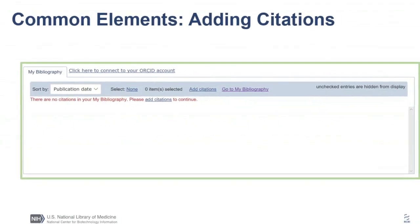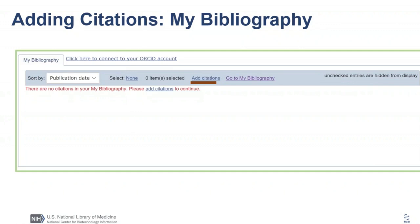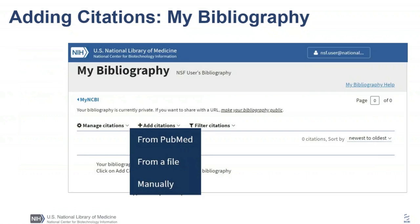Section C for NSF biosketches provides a description of acceptable and unacceptable products and citations. There's also an additional unique element to NSF — the ability to add additional citations. For all biosketches, Section C has an 'Add Citation' box that looks and operates the same. The first tab is My Bibliography; beneath that is an 'Add Citations' button that takes you directly to PubMed to add citations. Clicking 'Go to My Bibliography' takes you to My Bibliography, where you can add citations from PubMed, from a file such as an RIS from EndNote or RefWorks, or manually.